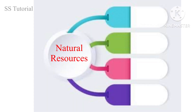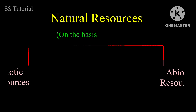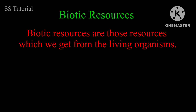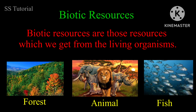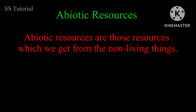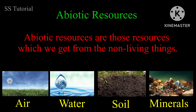Natural resources can further be classified on the basis of origin, ownership, exhaustibility or renewability, and distribution. On the basis of origin, resources are classified into two types: biotic resources and abiotic resources. Biotic resources are those we get from living organisms, like forest, animals, and fish. Abiotic resources are those we get from non-living things, such as air, water, soil, and minerals.